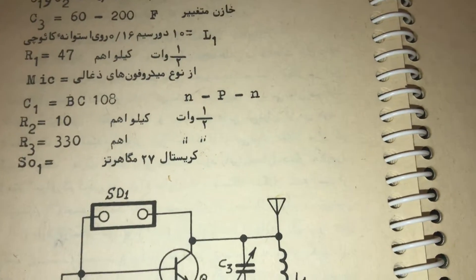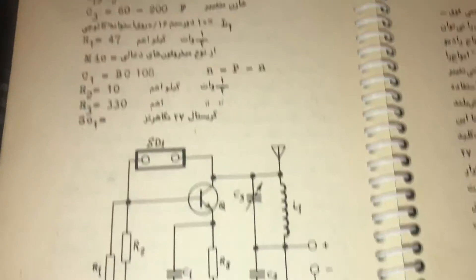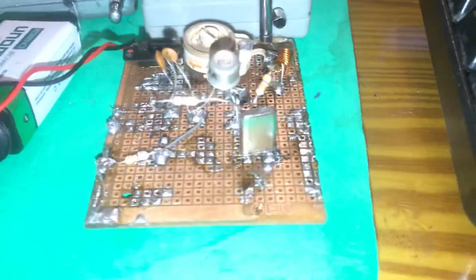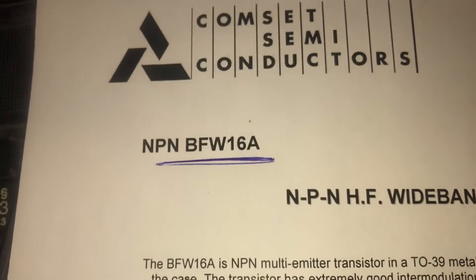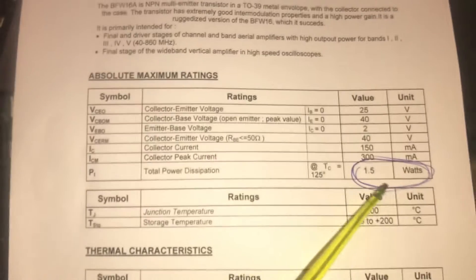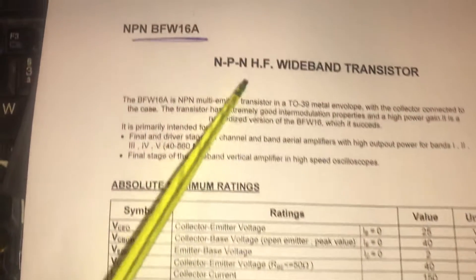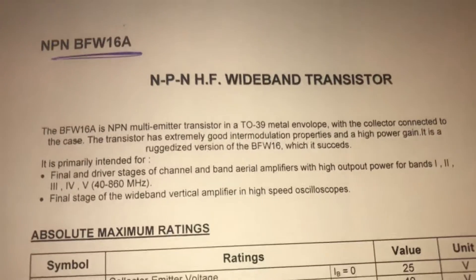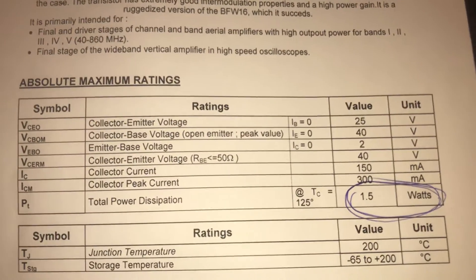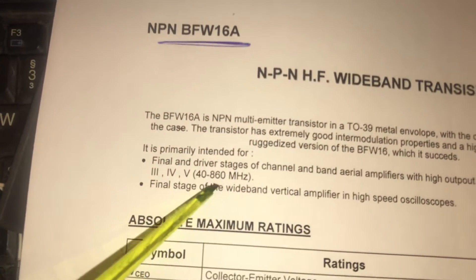BC108 or BC507, but I did not use the regular transistor. I use the BFW16A because I need more power and a different frequency from the original one. The BFW16A is from a CATV system. It is one-and-a-half watts of power. The title is NPN high-gain wideband transistor. The voltage goes up to 25 volts and the frequency range is 40 to 860 megahertz.